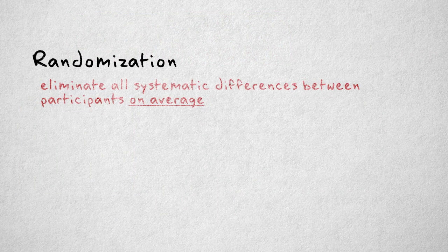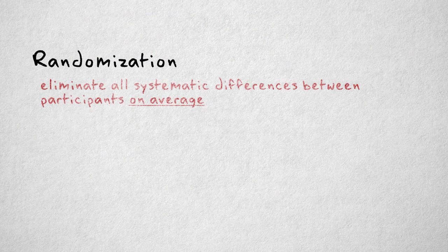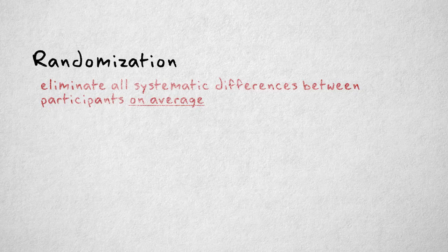On average, randomization ensures that there is no systematic difference between the groups, other than on the independent variable.